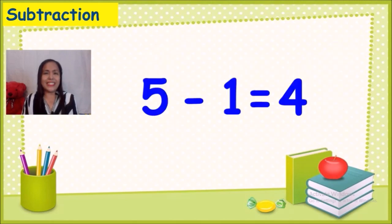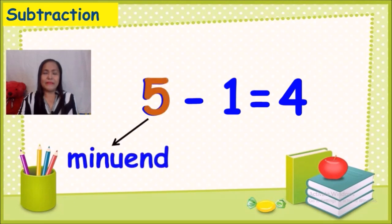Let us now discuss the parts of a subtraction sentence. The first number, which is five, is called minuend. Everybody say minuend. Minuend is the first number in subtraction.